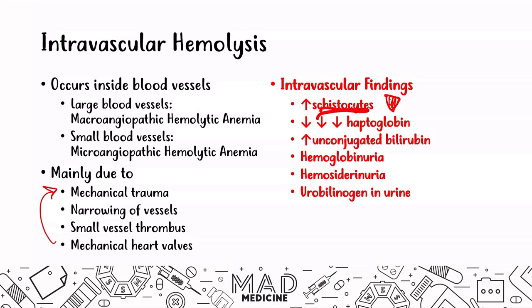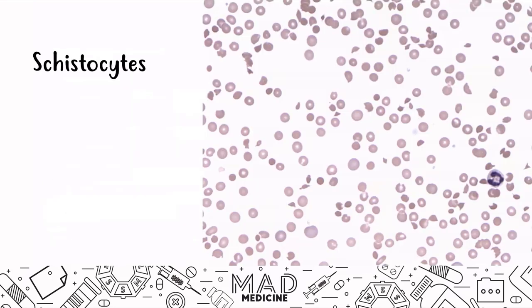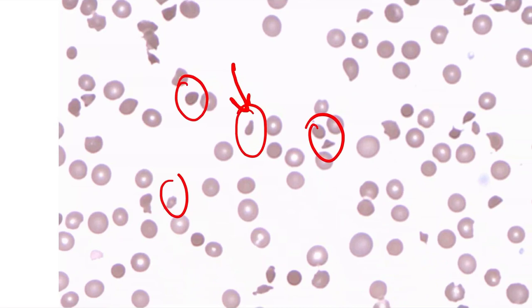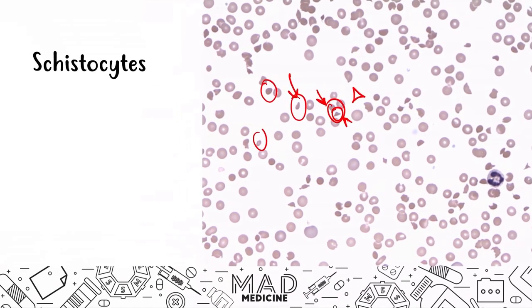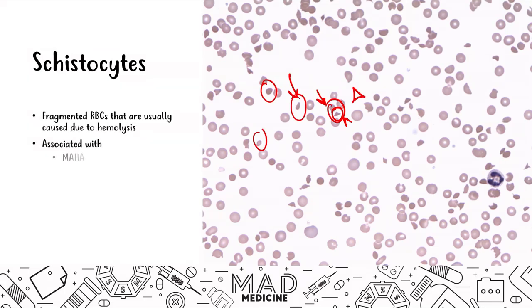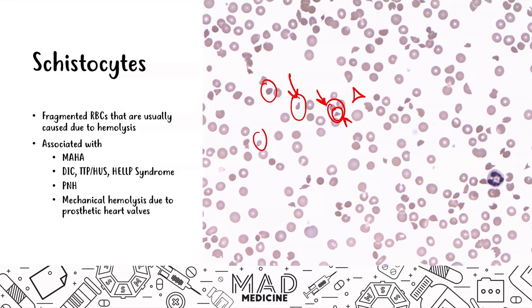Now let's talk about schistocytes. On a blood smear, you can see these little fragments of red blood cells. The classic finding of a schistocyte — also known as a helmet cell — is a fragment of a red blood cell usually caused by hemolysis. Schistocytes are associated with microangiopathic and macroangiopathic hemolytic anemia, DIC, TTP, HUS, HELLP syndrome, PNH (paroxysmal nocturnal hemoglobinuria), and mechanical hemolysis due to prosthetic heart valves. This is essentially a hallmark sign of intravascular hemolysis.